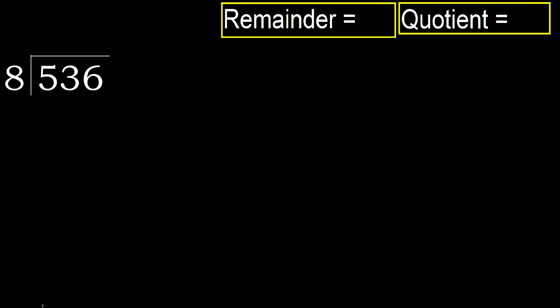536 divided by 8. 5 is less, therefore next. 53 is not less, therefore work with 53. 8 multiplied by which number is nearest to 53?